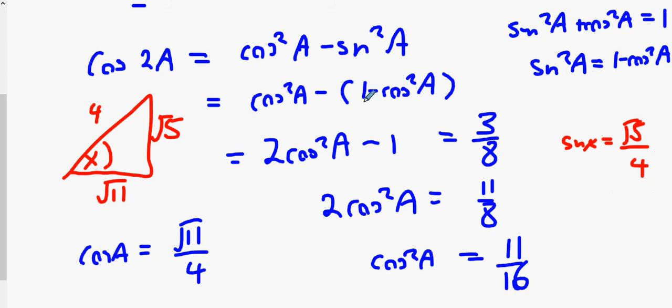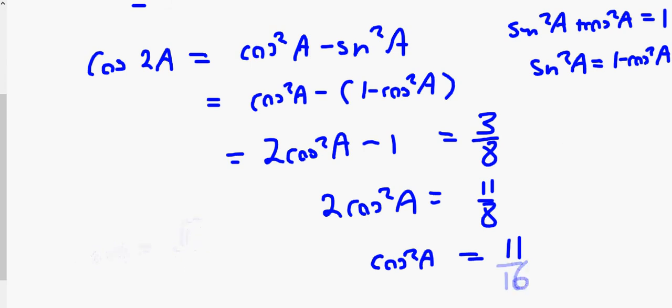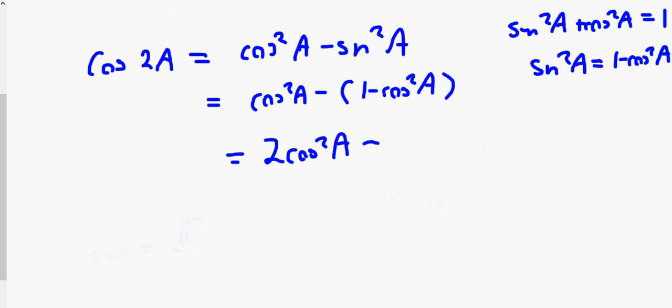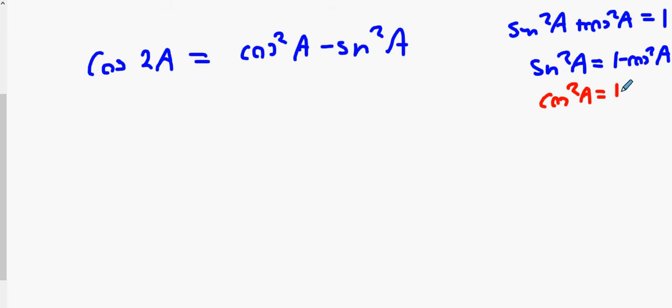Does anybody have a second method for doing it? Go back to the start and instead of eliminating cos squared A, what would you do instead?